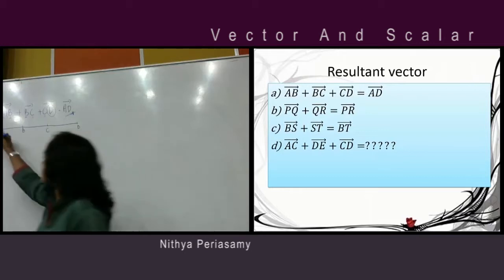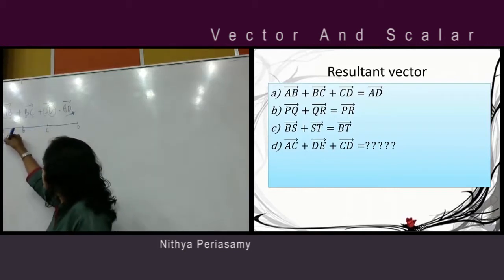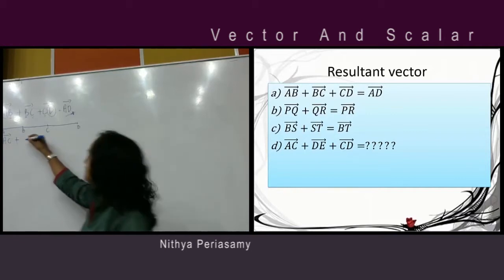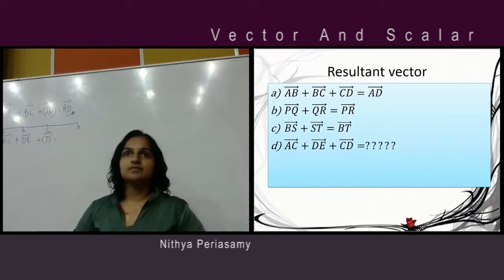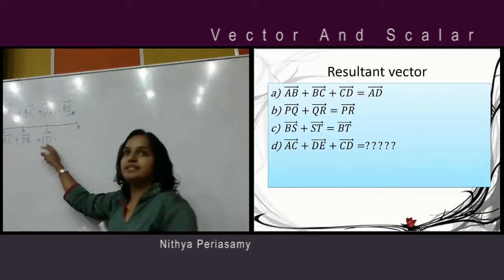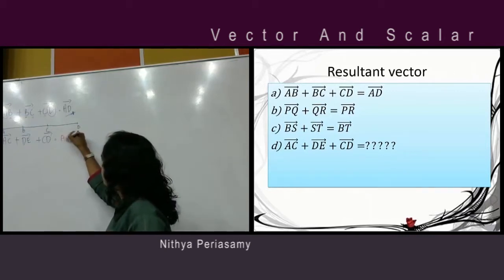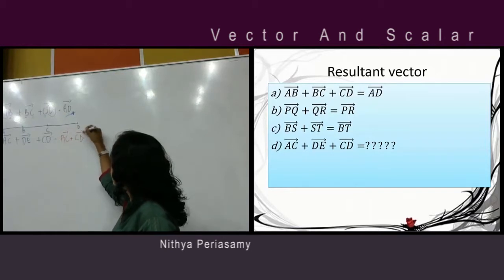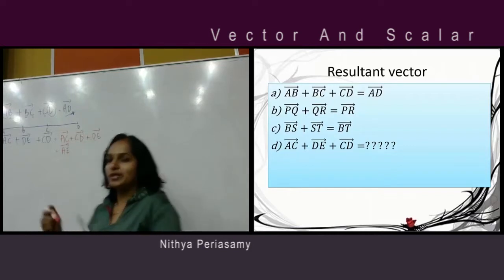Now, the fourth question. What is the answer for this question? AC plus DE plus CD. Anyone? AE. Are you sure? Maybe. Okay, C, D, E, C, not same. So first, you need to rearrange AC plus with CD plus with DE. So here, you can see C and C, D and D. So your answer is AE. Good.